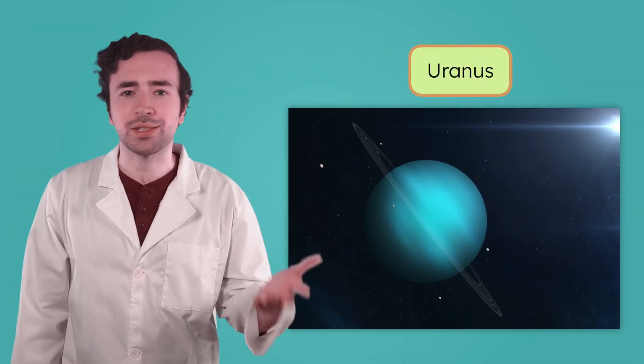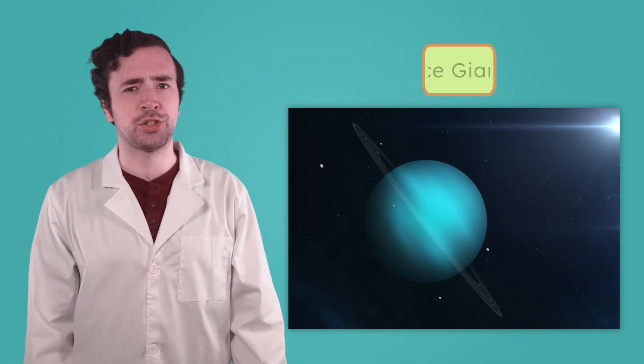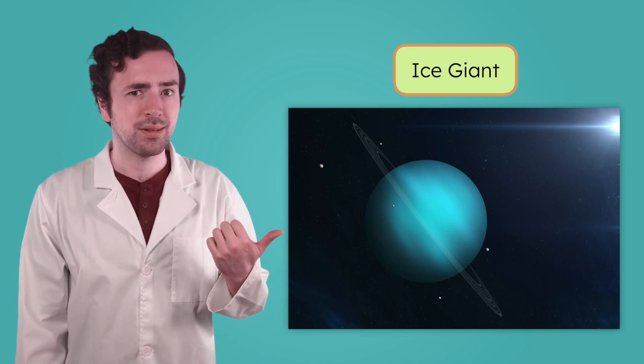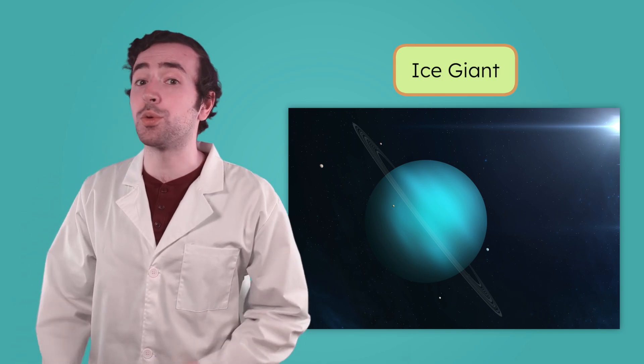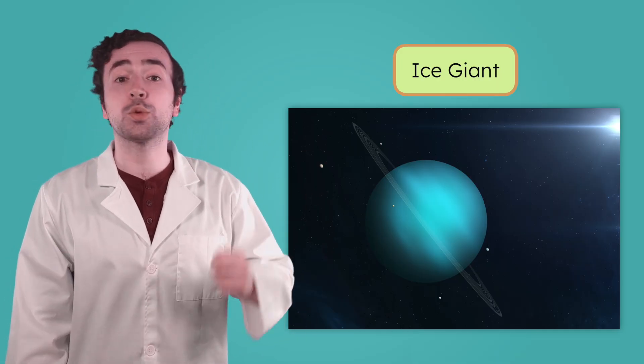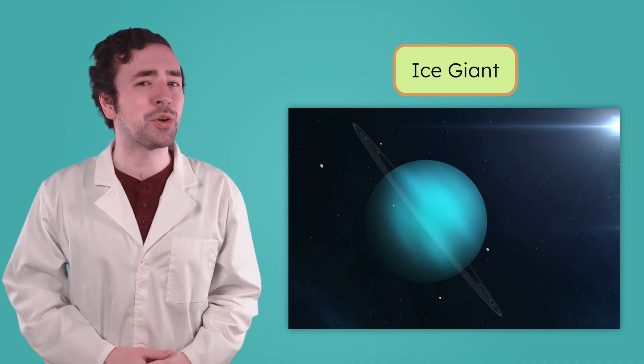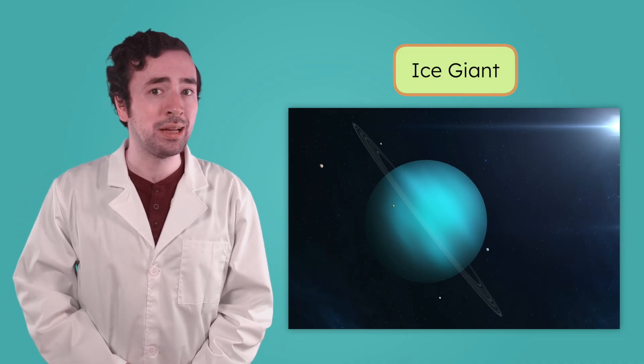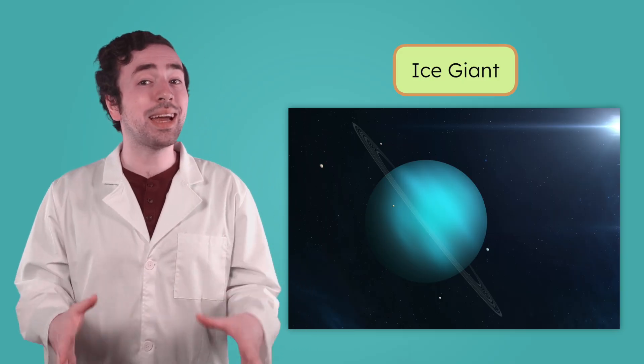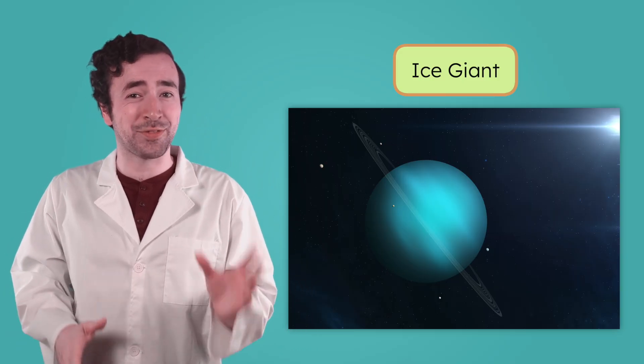Next up is Uranus, the seventh planet from the sun and the first of the two ice giants. Wait, ice giant? What do you think that means? Unlike Jupiter and Saturn, which are mostly made of gas, Uranus is made up of gas mixed with frozen materials. These icy ingredients are what give Uranus its blue-green color. It's also the coldest planet in the whole solar system, getting as cold as negative 320 degrees Fahrenheit.